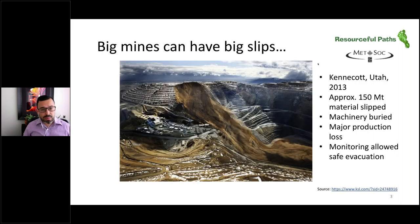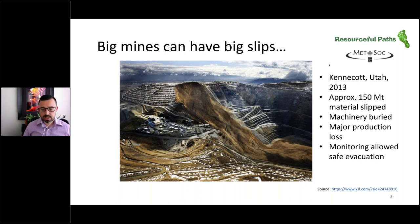Big mines can have big failures. This is an example from the Kennecott Utah mine near Salt Lake City in 2013, where about 150 million tons of material slipped off the side of the mine and buried a whole lot of the mining fleet. It caused major production loss. Thankfully, there was no loss of life or injury because there was monitoring. But this is an example of how major mines can have major failures.